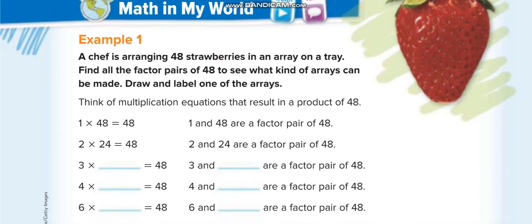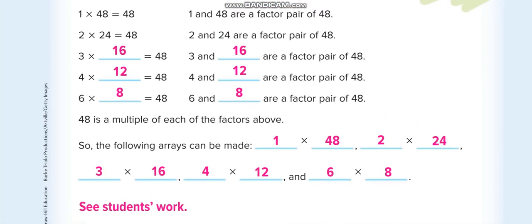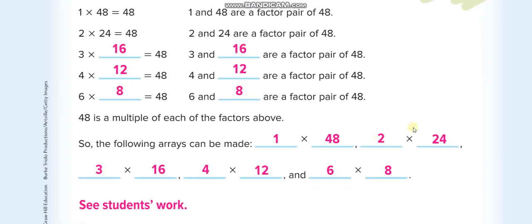Now let's move to the lesson. The first question asks us to find the factor pairs of 48. The factor pairs are: 1 times 48, 2 times 24, 3 times 16, 4 times 12, and 6 times 8. When you multiply each pair, you get 48.